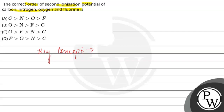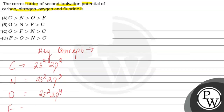Let's look at each element's atomic configuration. Carbon is 2s²2p². Nitrogen is 2s²2p³. Oxygen is 2s²2p⁴. And fluorine is 2s²2p⁵.